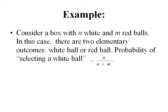Let us consider an event of selecting a white ball and define its probability. The probability of selecting a white ball according to the classical definition is given by the number of favorable outcomes to this event, that is n white balls, to the total number of outcomes for this particular experiment.